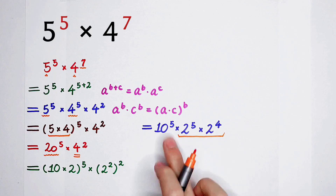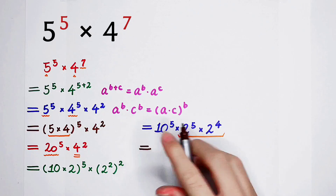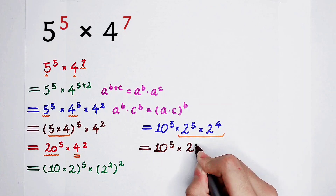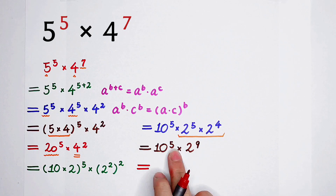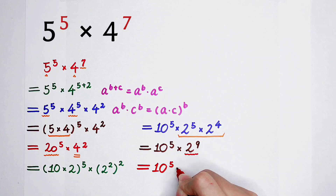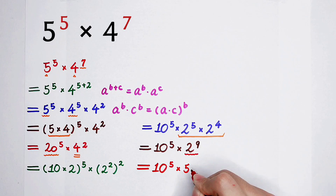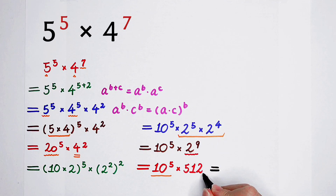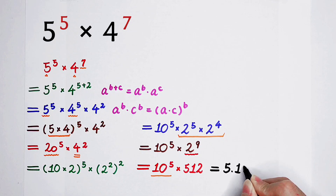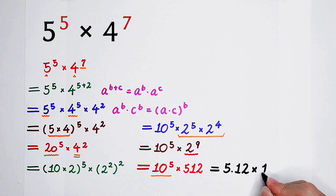Now I would like to multiply these 2 together: 10 to the power 5, then times 2 to the power 5 plus 4. That is 2 to the power 9. And 2 to the power 9 is 512. Because here appears a 10 to the power 5, I think we should write it in scientific notation. So it is 5.12 times 10 to the power 5, and then 10 to the power 5 plus 2 is 7. So the final answer is 5.12 times 10 to the power 7.